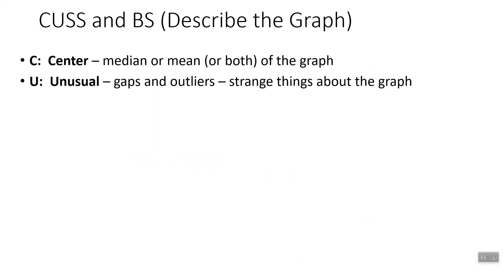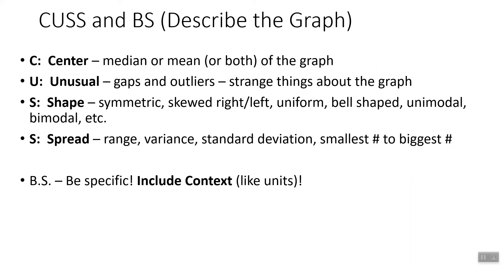When describing graphs, we want to CUSS — center, unusual, shape, and spread. Center is the mean or the median; don't say 'the center of the graph is this' — say 'the median is this' or 'the mean is that.' Usually you can calculate the median. For unusual, a lot of times you're going to say there's nothing unusual, but if there's a gap say there's a gap, and if there's an outlier you've calculated then you can say there's an outlier. If you haven't calculated it, you have to say 'there appears to be' or 'there may be an outlier.'